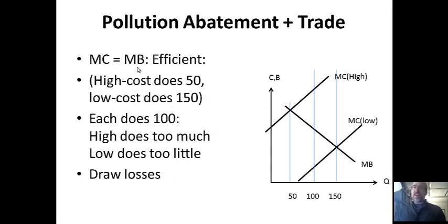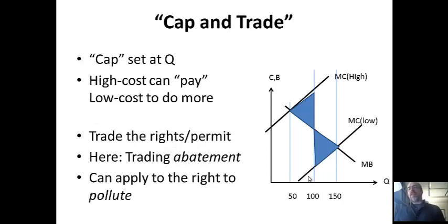So we know marginal cost equals marginal benefit, and that's the efficient point, but here there are actually two points, and it would be probably better if the high-cost firm did less, so they did 50 of the 200, and the low-cost firm, remember, it's easier for them, they do 150. We can compare that to each doing 100. This would actually be applied to both. We would see that the high-cost firm would be doing too much, and the low-cost firm would be doing too little. You can use those triangles to draw the losses. So this is all the losses from the high-cost firm doing too much of a costly activity. This is the losses from the low-cost firm doing not enough of a low-cost activity. So this is kind of like the deadweight loss. This line here involves losses to society.